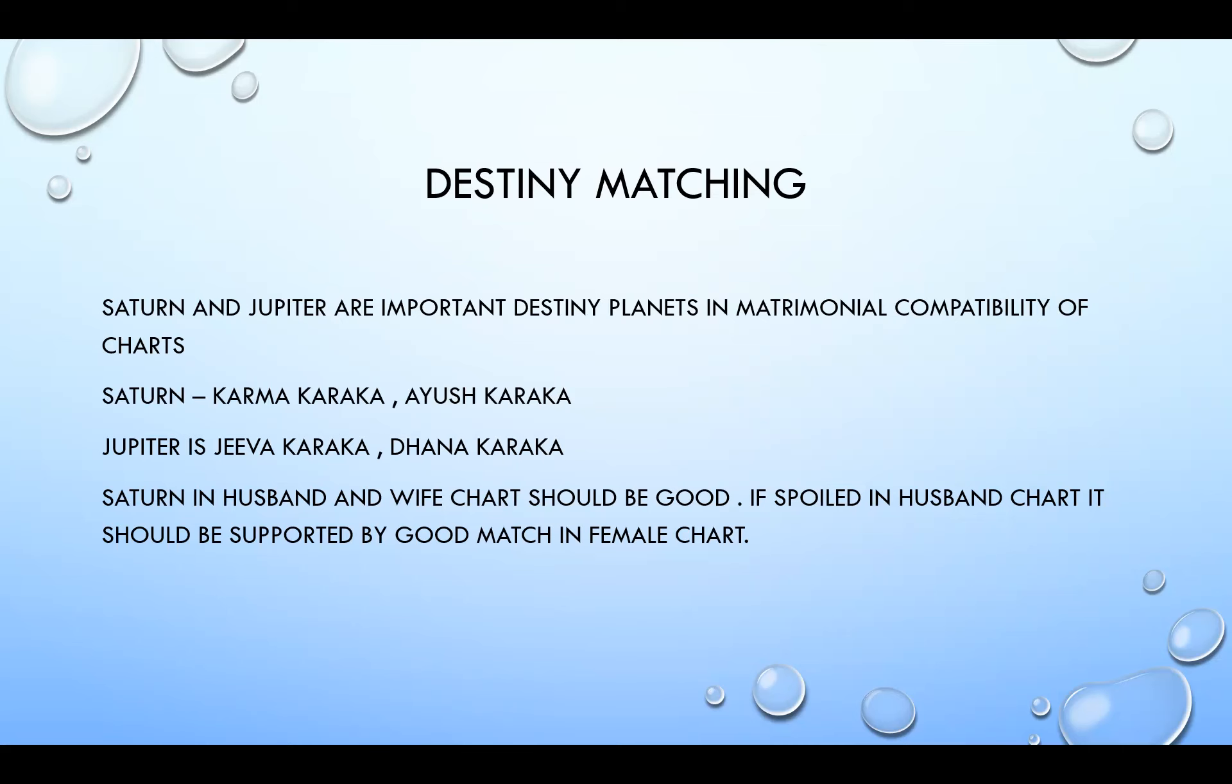Now here we all know Saturn is the Karma Karaka, that is the Udyoga Purusha Lakshanam. And today, irrespective of the gender base, both are working. That is a good sign. And Ayush Karaka is also Saturn. And Jupiter is a Jiva Karaka common to both male and female. And Dhana Karaka, that is the Karaka for finances.